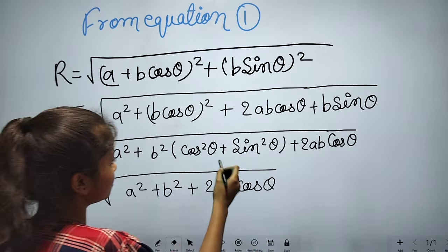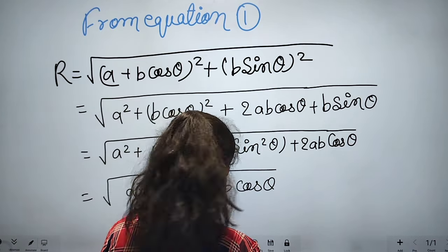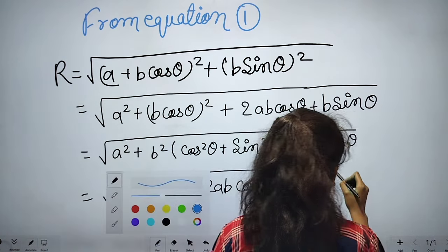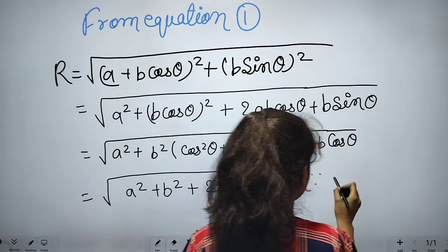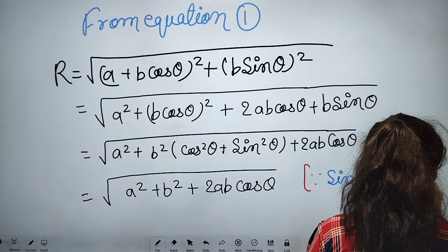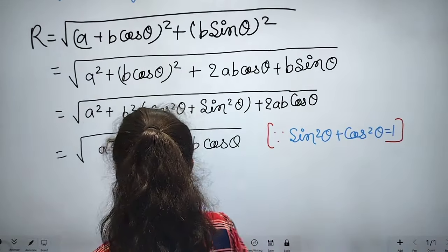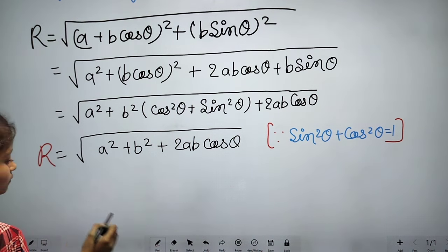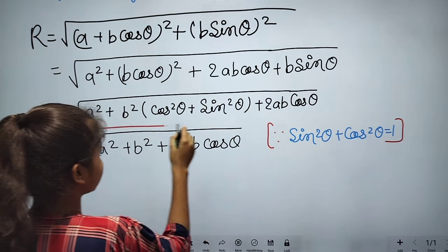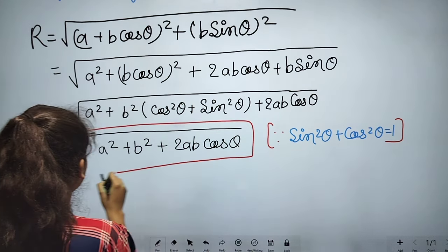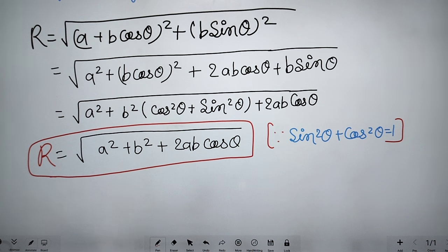Why is it 2AB·cos theta? Because sin²theta + cos²theta = 1. That's why, if we simplify, this is your formula. R = √(A² + B² + 2AB·cos theta). This is because sin²theta + cos²theta equals 1. This is the formula.